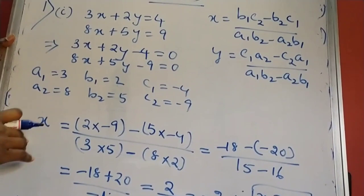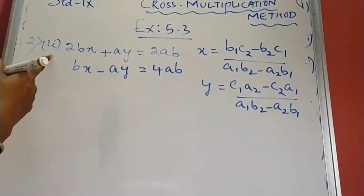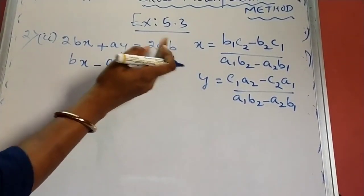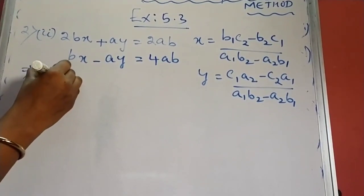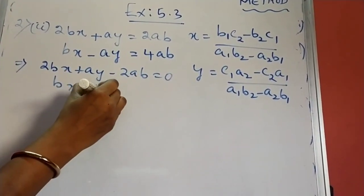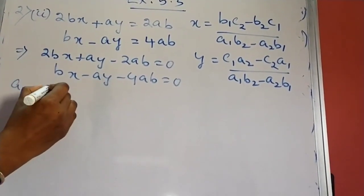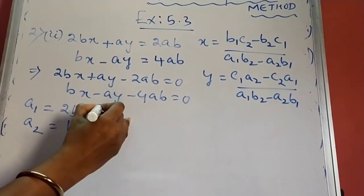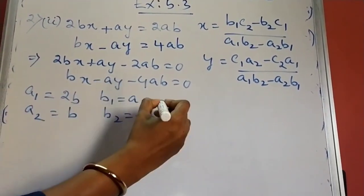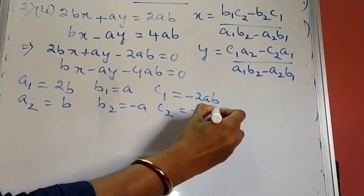Now let me do another question from the same exercise — question number 2, second bit. Here we have a pair of linear equations. Bringing the constant to the left side: 2BX plus AY minus 2AB is equal to 0, and BX minus AY minus 4AB is equal to 0. Here A1 is 2B, A2 is B, B1 is A, B2 is minus A, C1 is minus 2AB, and C2 is minus 4AB.